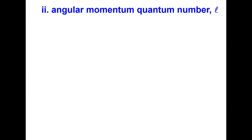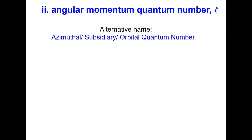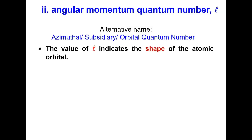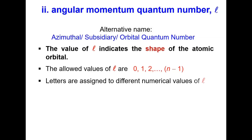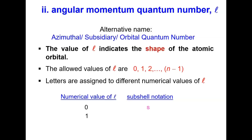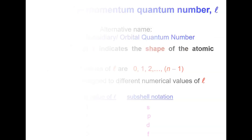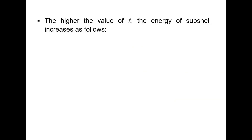The angular momentum quantum number L has three alternative names: azimuthal, subsidiary, or orbital quantum number. The value of L indicates the shape of the atomic orbital. The allowed values of L range from 0, 1, 2, up to N−1. Letters are assigned to numerical values of L: L=0 is S, L=1 is P, L=2 is D, and L=3 is F.